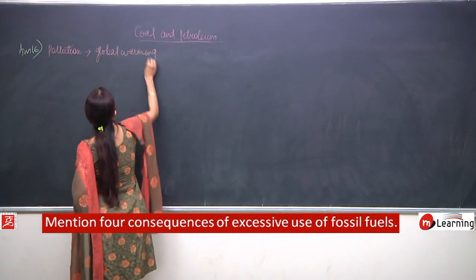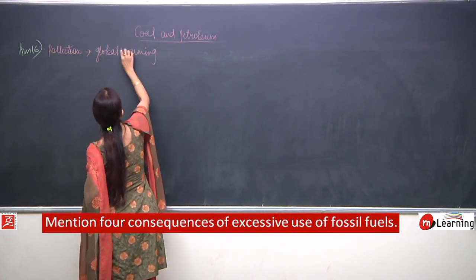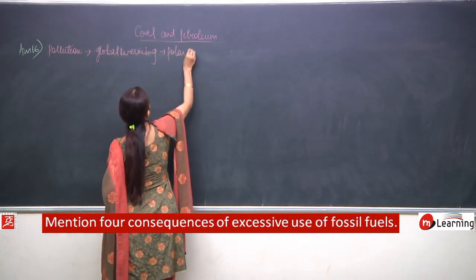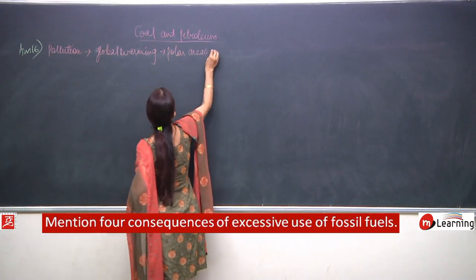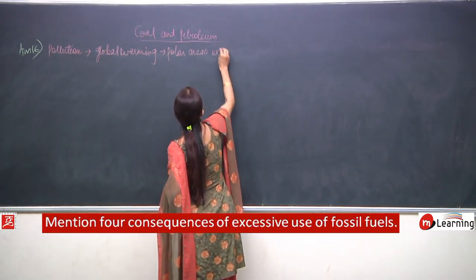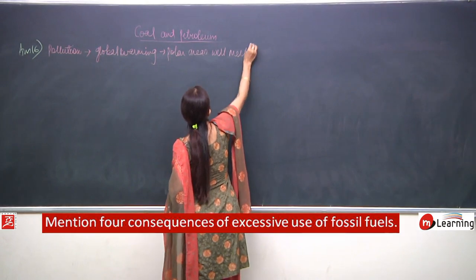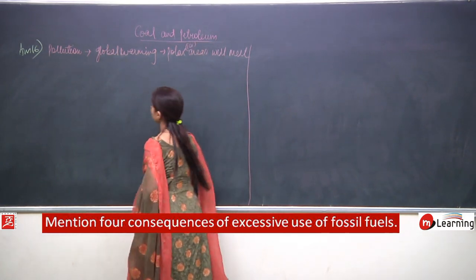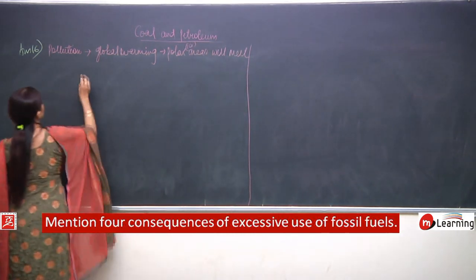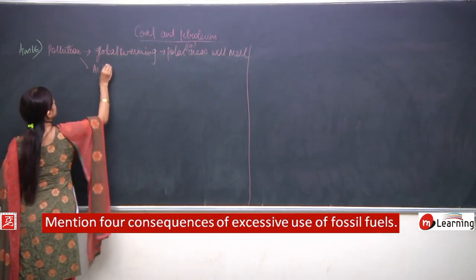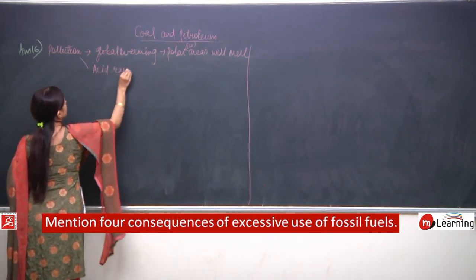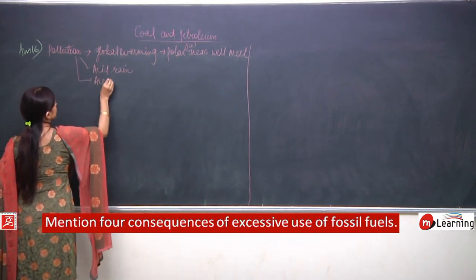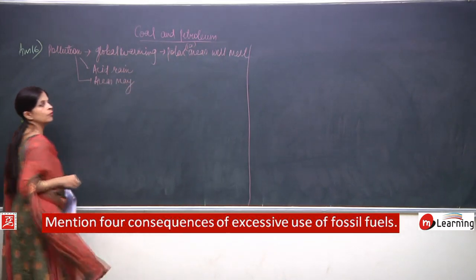Due to global warming, polar areas - meaning glaciers or polar ice - will melt. It will also give rise to acid rain, and areas may submerge into the water.